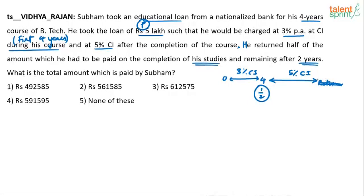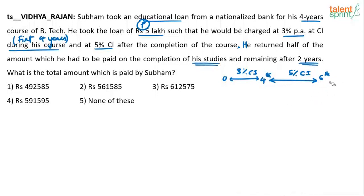So the full return period spans 6 years — from the 4th year to the 6th year. For 0 to 4 years it is 3%; from the 4th year to the 6th year, since he returned the remaining after two years, it was 5% per annum for those two years. He returned the rest of the amount in the 6th year.